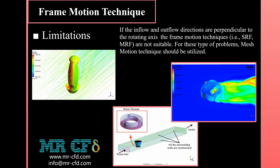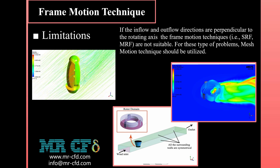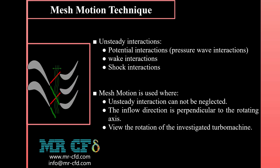The most prominent case is the investigation of vertical axis wind turbines (VAWTs). For these types of problems, mesh motion techniques should be utilized. The relative motion of stationary and rotating components in a turbomachine gives rise to unsteady interactions, generally classified as potential interactions (due to pressure wave interactions), wake interactions, and shock interactions.